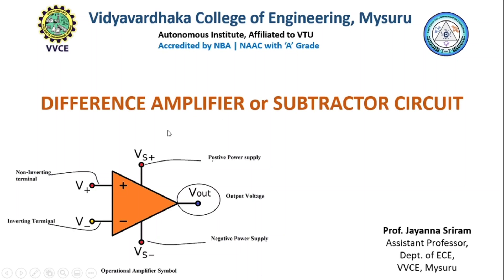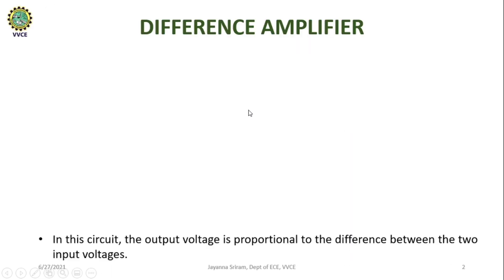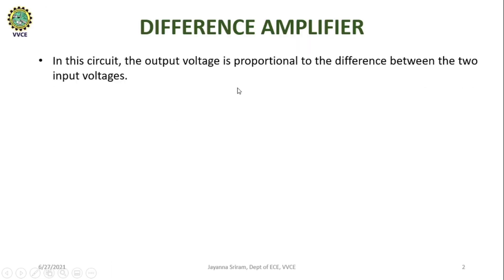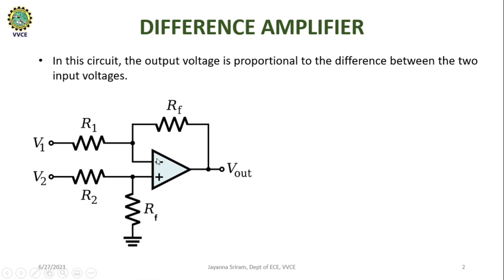Hello all. In this video I am going to solve few problems on difference amplifier or subtractor circuit. In this circuit, the output voltage is proportional to the difference between the two input voltages. This is the representation of difference amplifier where V1 is the input voltage applied to the inverting terminal and V2 is the input voltage applied to the non-inverting terminal.